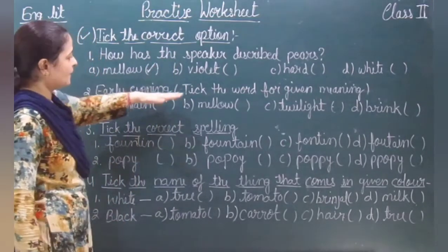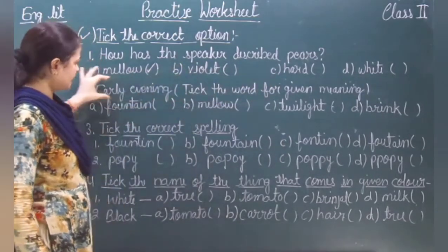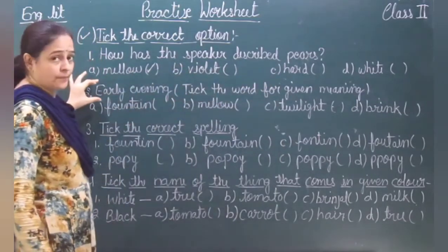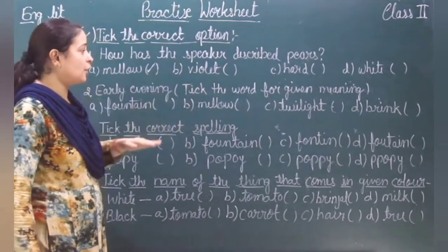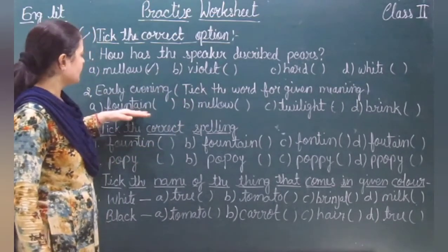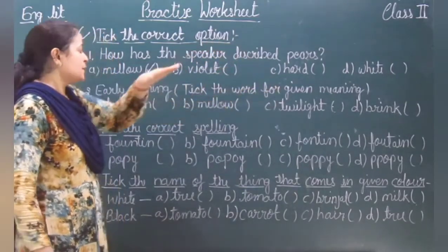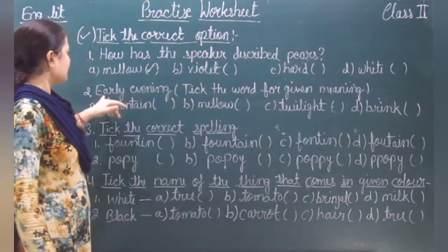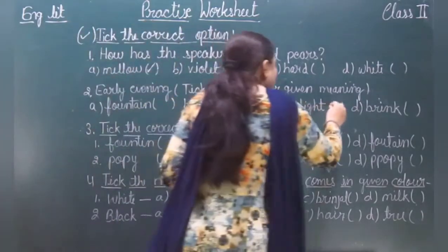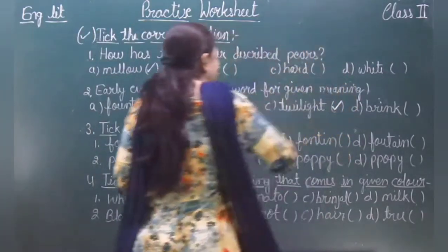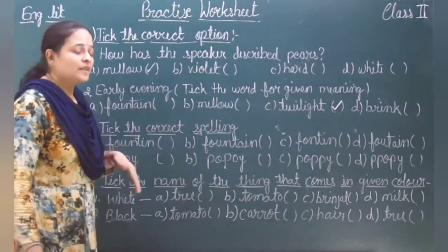Next question: take the word for the given meaning — early evening. The options are fountain, mellow, twilight, and brim. The word for early evening is twilight.